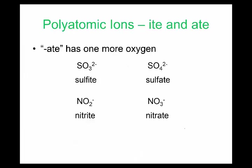A note about polyatomic ions: there are 'ites' and 'ates.' On the list of polyatomic ions, the ones ending in '-ite' usually have one fewer oxygen atom than the '-ate' version, while the charges remain the same. For example, sulfite vs. sulfate, or nitrite vs. nitrate — this pattern helps with memorization.